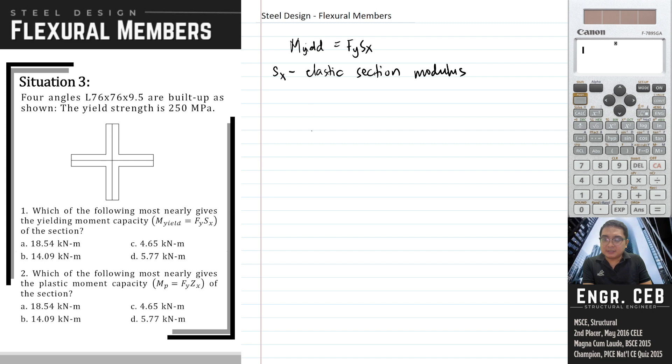Let's say this is one of the angles. The name of the section is L76 by 76 by 9.5. The first two numbers mean the dimension of the legs, so this is 76 and this is also 76. The third number corresponds to thickness of the legs, so this is 9.5 and this is also 9.5.